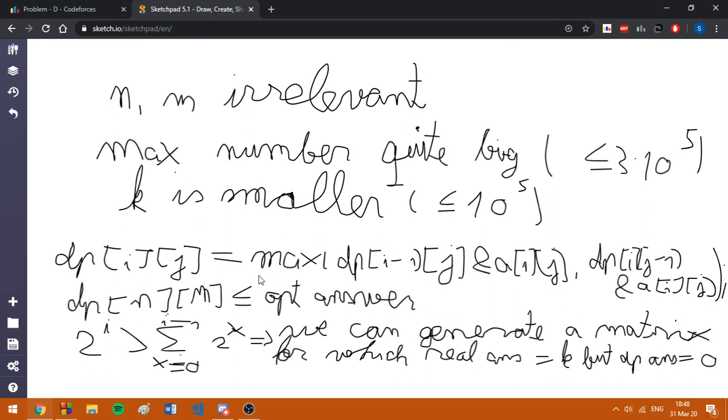Since DP of n,m is always smaller or equal than the optimal answer, it can be proved quite easily that it's not the other way around because if it was the other way around, then the DP of n,m could have been bigger than the optimal answer and thus become the optimal answer, which is false.